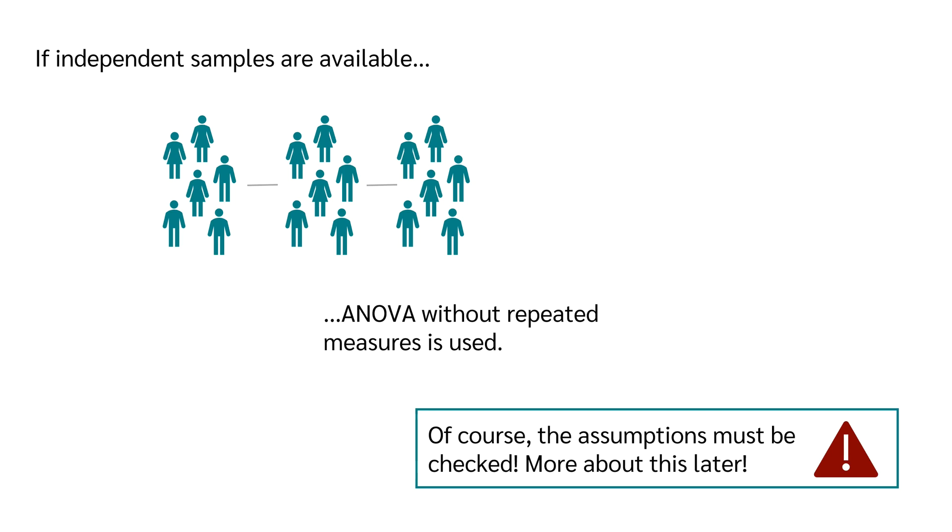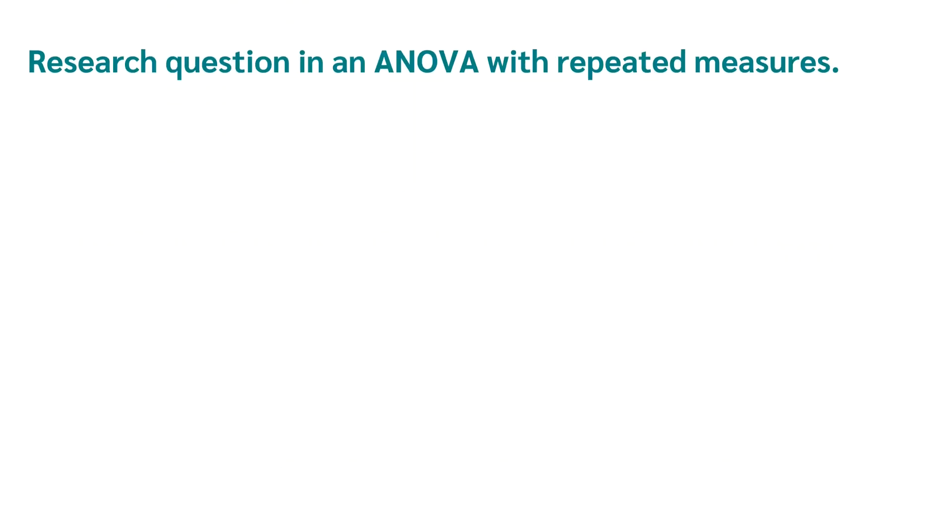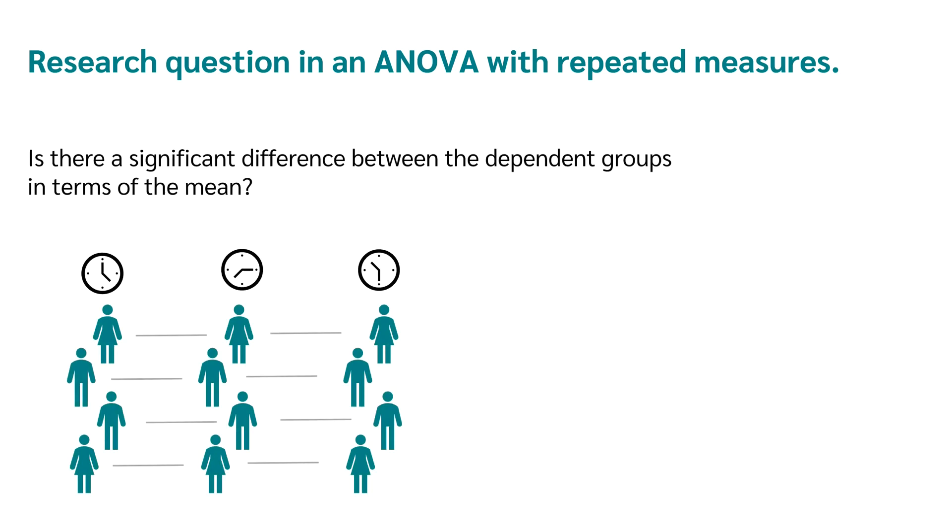So, what is the research question in a repeated measures analysis of variance? The research question could be: is there a significant difference between the dependent groups in terms of the mean?